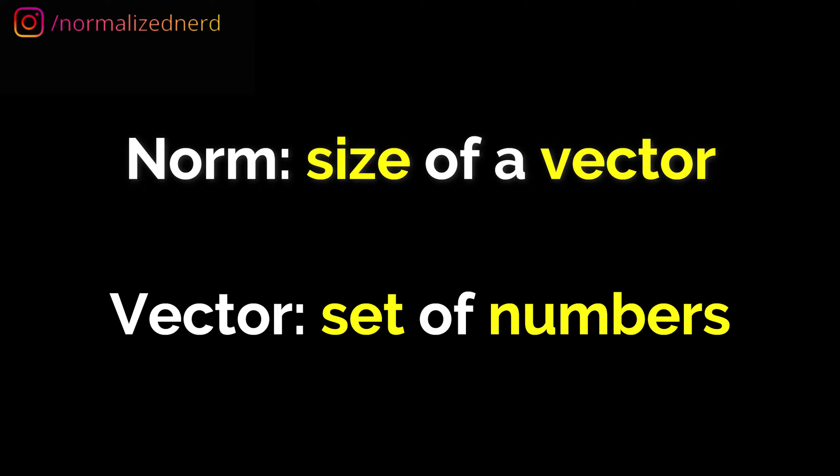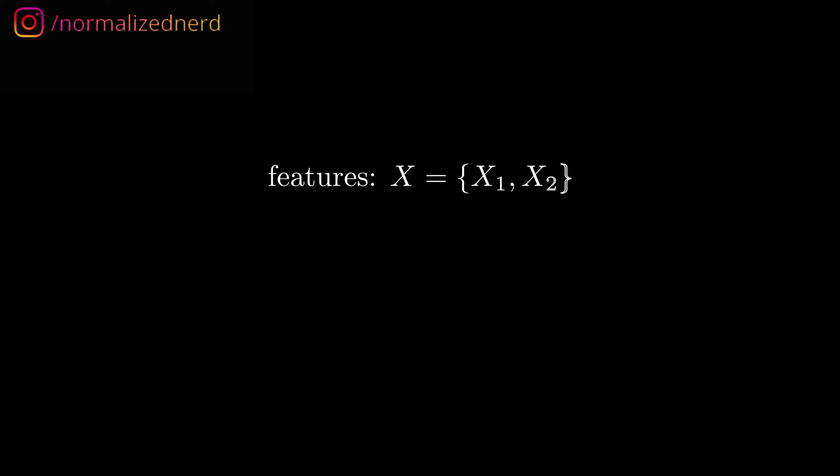As you might already know, in machine learning everything is represented in terms of vectors. For example, let's take the feature vector. Suppose our set of features contains two elements, X1 and X2. So we can represent the features as a two-dimensional vector. A is such a 2D vector.